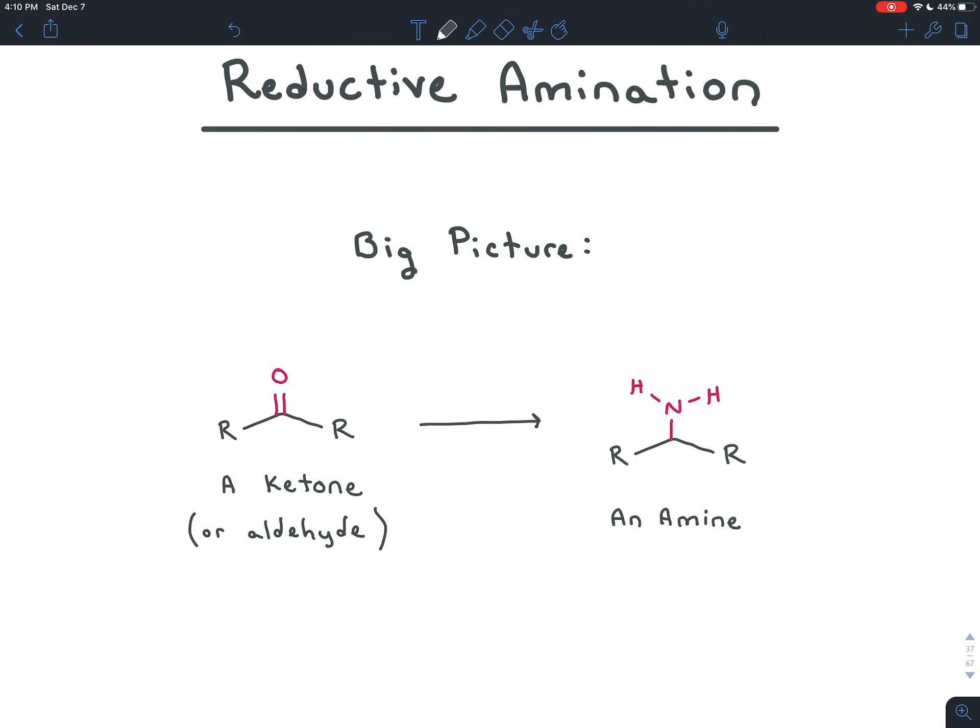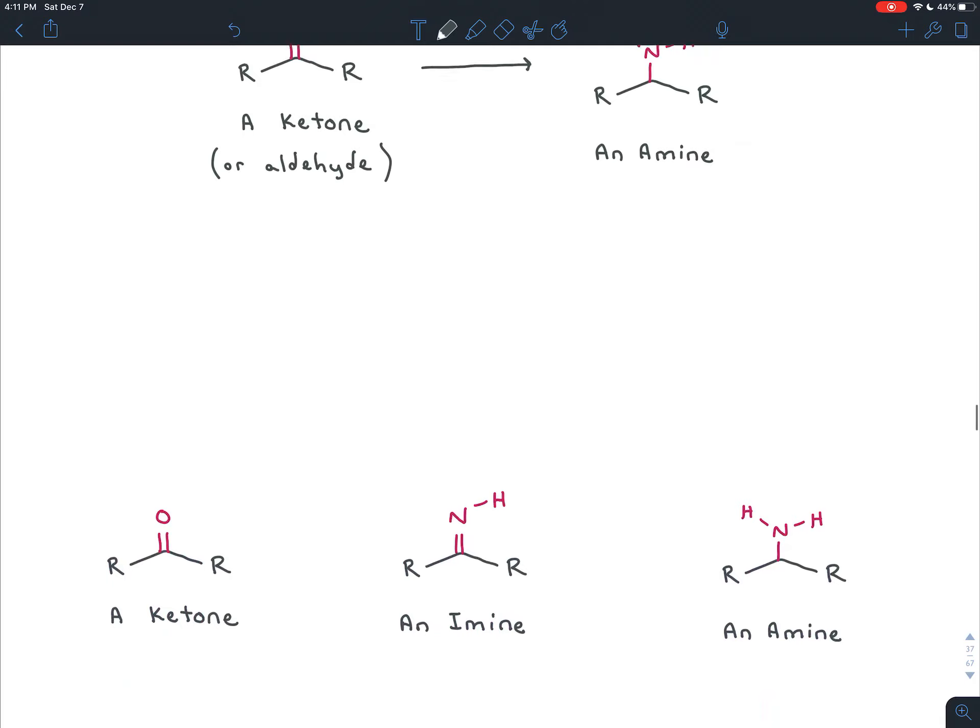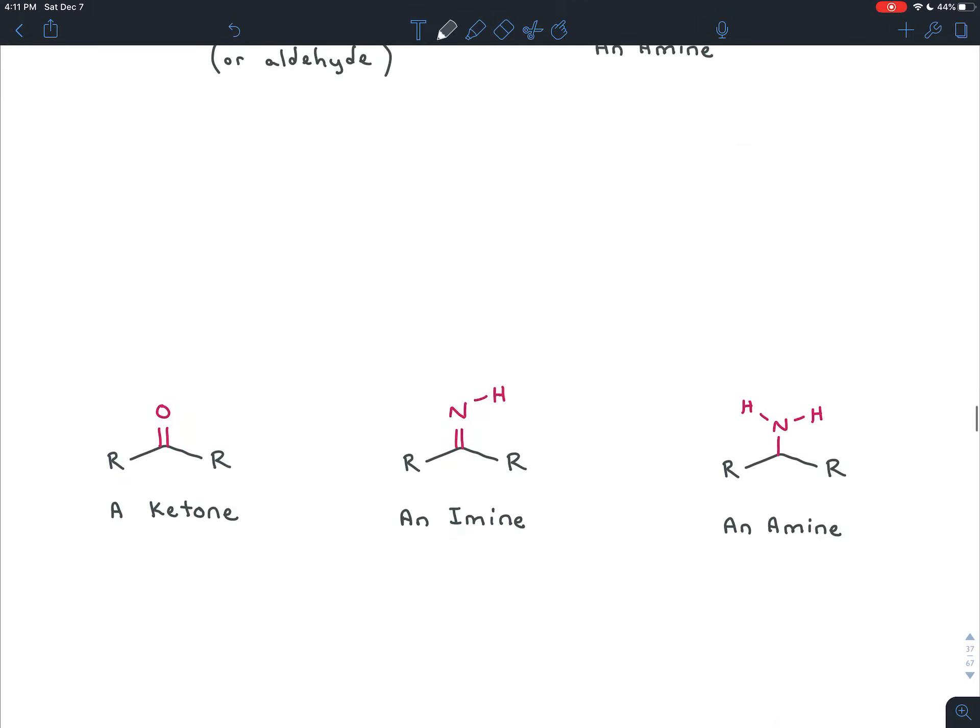So there are two things we have to accomplish in a reductive amination. The first is to replace the oxygen with the nitrogen. And then the second is to reduce those two bonds to that electronegative element to just one. So that overall, conceptually, what we're going to do is turn a ketone into an amine.